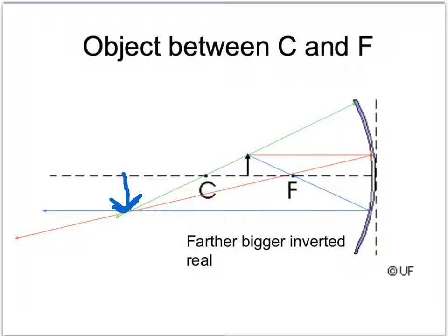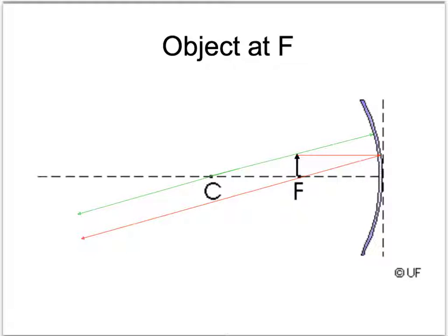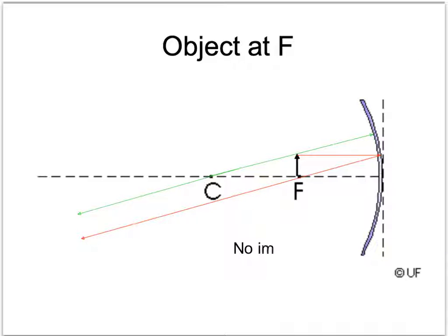You may be wondering why you're not seeing the image upside down — that's because the image in the data projector is actually projected upside down so that when it hits the mirror, it reflects back right-side up. If the object is at the focal point, the ray going in parallel comes out through F, but the ray going in through F doesn't hit anything, so we ignore it. The remaining rays are parallel and will never meet, so if the object is at the focal point, you will get no image.